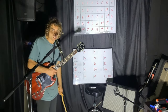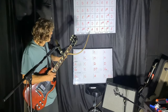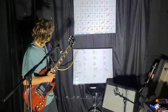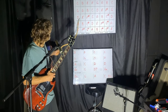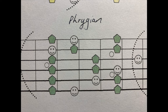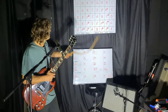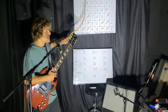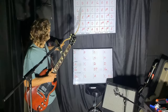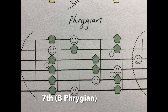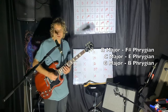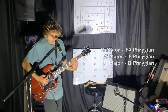This next time through we're going to utilize the Phrygian mode off the third. So for the D chord, we come to our third — we've got the F# Phrygian. For the C chord, we've got the E Phrygian. For the G chord, we've got the B Phrygian. D chord — back to the F# Phrygian. I'll show you how we can use those.